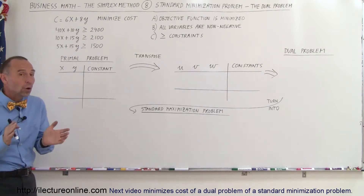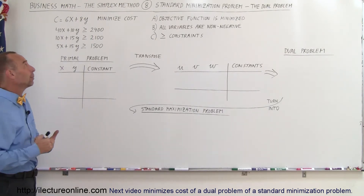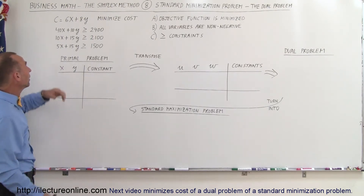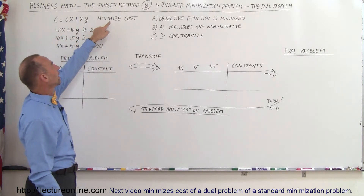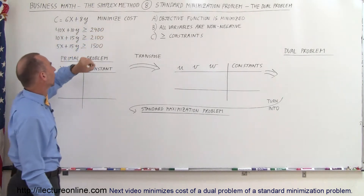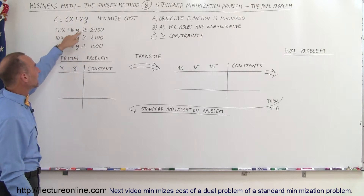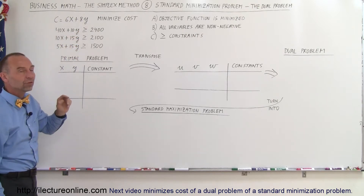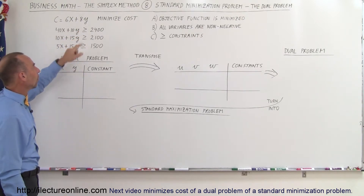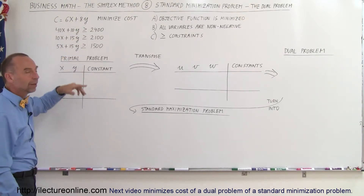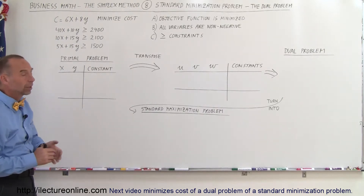How do we know it's a standard minimization problem? Well, for one thing we're given a cost equation and we're asked to minimize the cost. Secondly, notice the inequality symbols — they all say greater than or equal to, all three of them. Those are the hallmarks of a minimization problem.